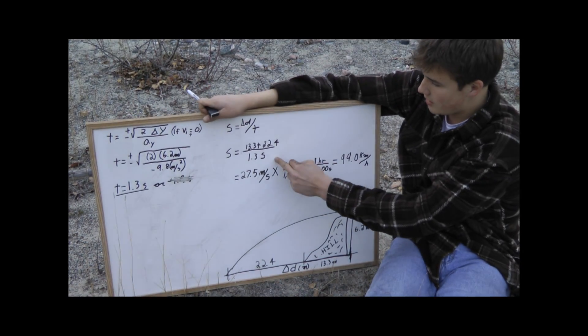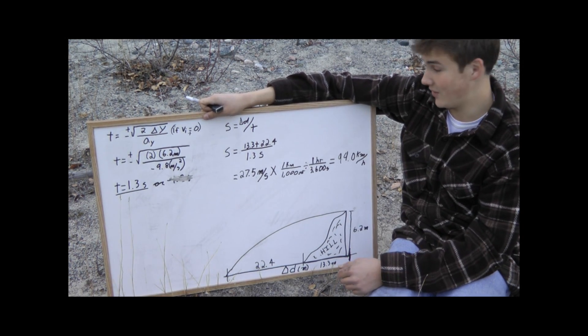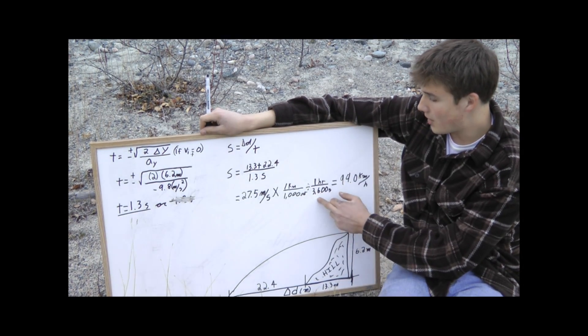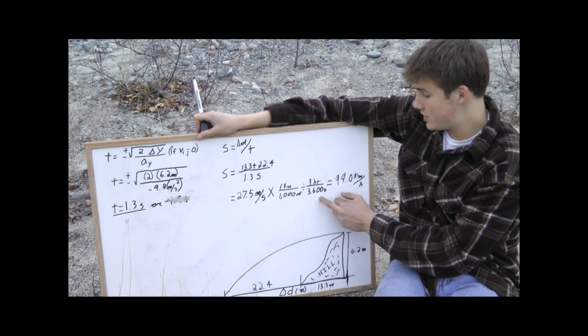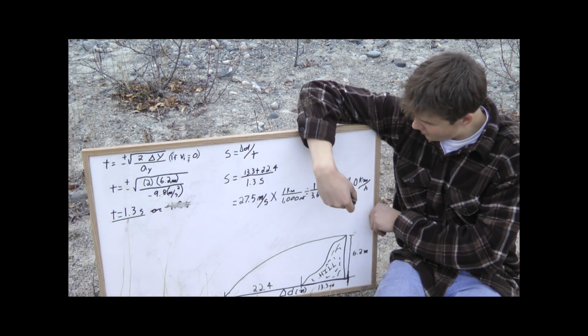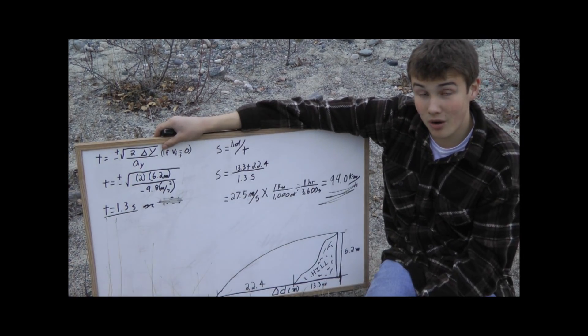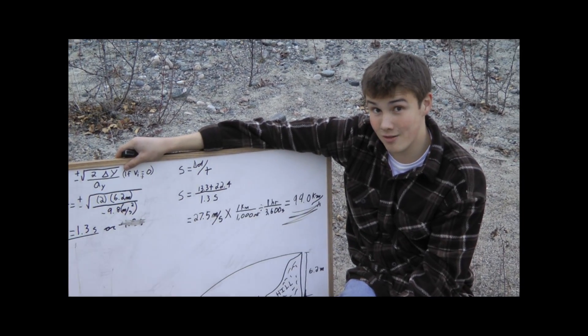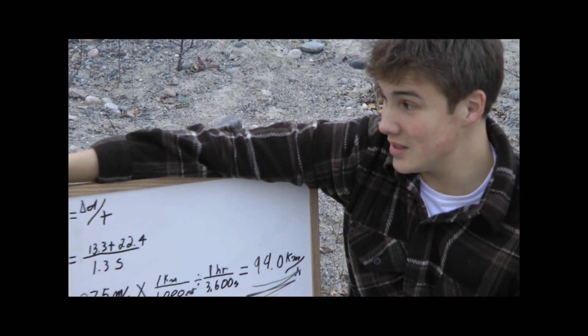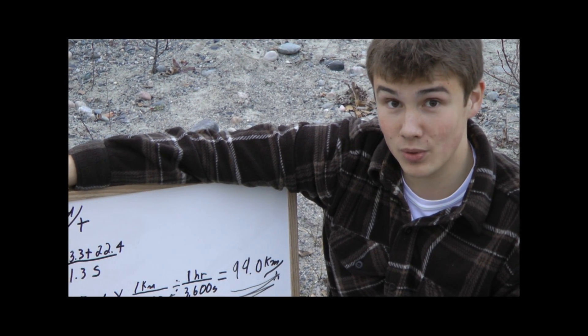So when you add those together and divide by 1.3 you get 27.5 meters per second. Now multiply that by 1 kilometer over 1,000 meters and divide it by 1 hour over 3,600 seconds. We calculate the final velocity of the spear to be 99.0 kilometers per hour, neglecting air resistance and wind. So factoring in those we can probably safely estimate that the spear is traveling over 100 kilometers per hour.